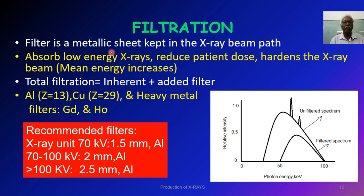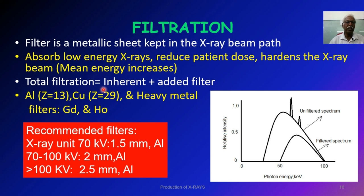A filter is always used in X-ray production. It is a metallic sheet placed in the X-ray beam path. It absorbs low energy X-rays, reduces patient dose, and hardens the X-ray beam, resulting in an increase in mean energy. As seen in the diagram, the unfiltered spectrum becomes smaller and the average energy increases when a filter is added. In practice, total filtration is used, which consists of inherent filtration — inherently available in the X-ray tube — and added filtration, which is the add-on filter used by manufacturers to achieve the intended X-ray beam.